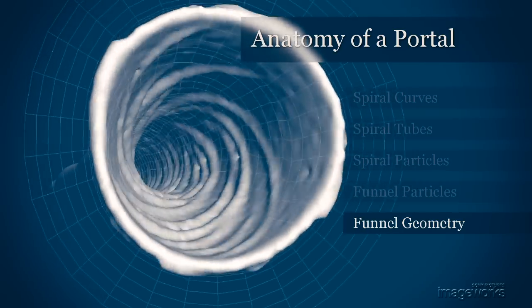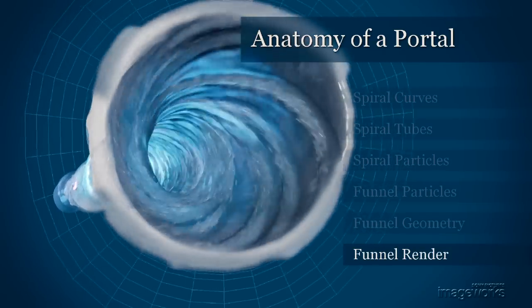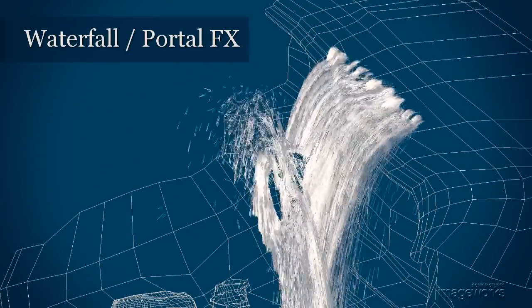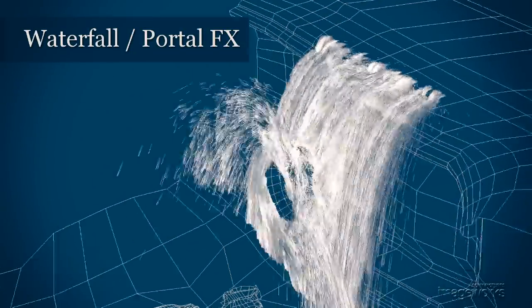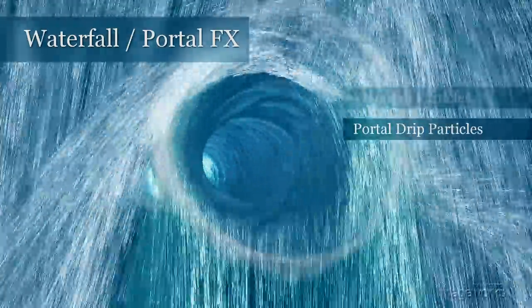Since the tube was not there on location, we replaced the waterfall in the plate with CG water and simulated the physics that would occur if the water were hitting a spinning tube. The inside water tube is then combined with the outside effect for the final look.